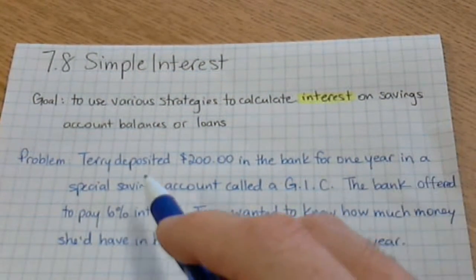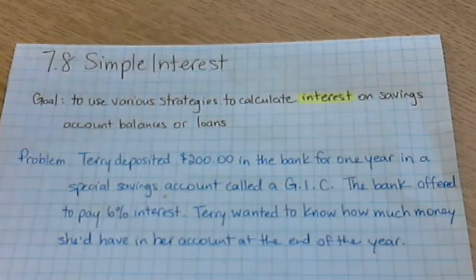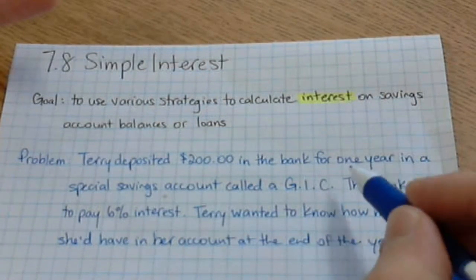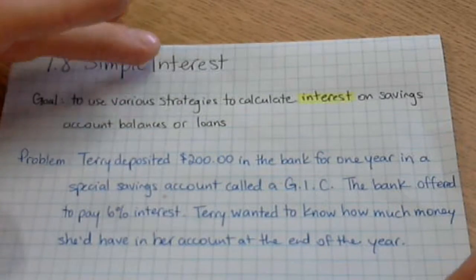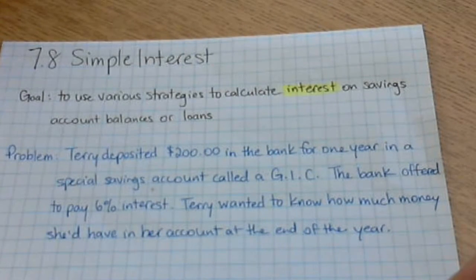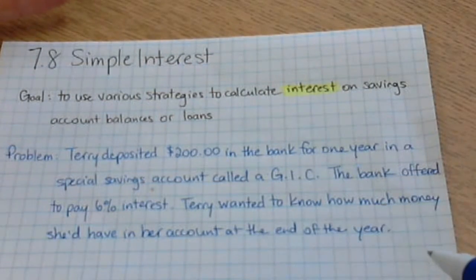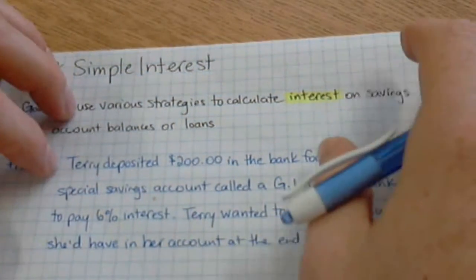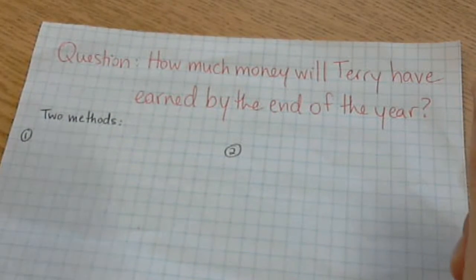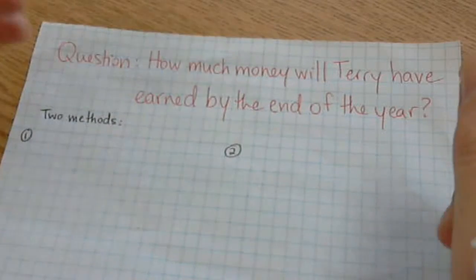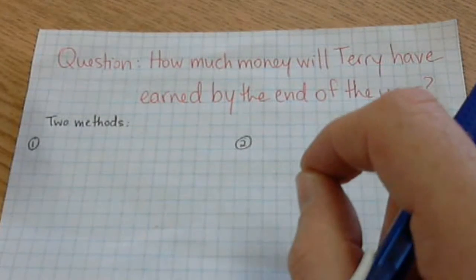We're going to look at this problem where Terry deposits $200 in the bank for one year in a special savings account called a GIC. The bank offers to pay 6% interest, which is a lot. Terry wants to know how much money she'll have in her account at the end of the year. That's the main question: how much money is Terry gonna have earned by the end of the year? How much interest will she have earned?